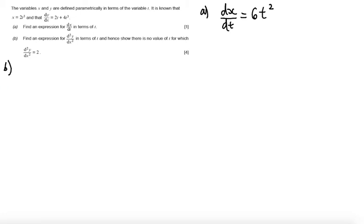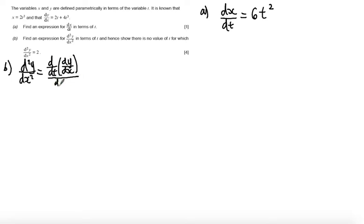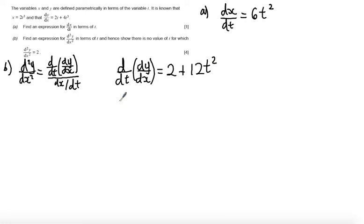Part B asks to find an expression for d²y/dx² in terms of t, and hence show that there is no value of t for which d²y/dx² is equal to 2. It's worth knowing that d²y/dx² is equal to d/dt of (dy/dx), divided by dx/dt. Differentiating dy/dx with respect to t gives us 2 plus 12t squared. So d²y/dx² equals (2 plus 12t squared) all over 6t squared.